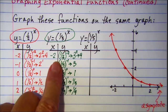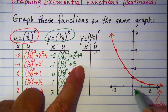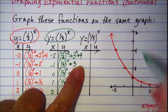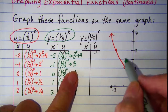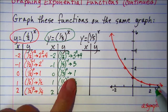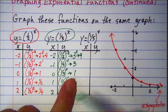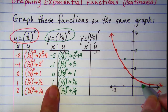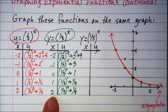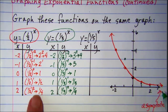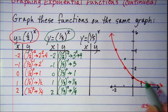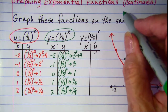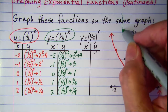So let's plot these points. When x is negative 2, y is 9, so that's off the graph. When x is negative 1, y is 3. When x is 0, y is 1 — that point is shared with the first one we graphed. When x is 1, y is one third, which is smaller than one half, so it's going to be between the x-axis and the orange curve. When x is 2, y is one ninth, which is smaller than one fourth, so that's squeezed in between the orange graph and the x-axis. So my y equals one third to the x graph looks like this.